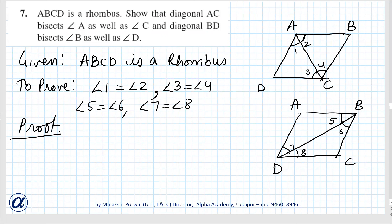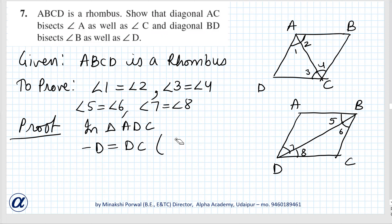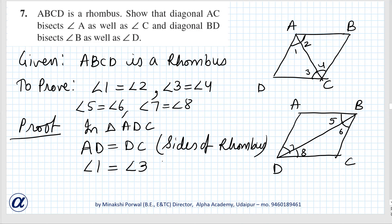In triangle ADC, AD equals DC because it is a rhombus — sides of a rhombus are equal. So if AD equals DC, angle 1 will be equal to angle 3, since angles opposite to equal sides are equal.